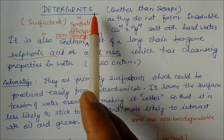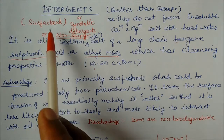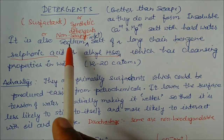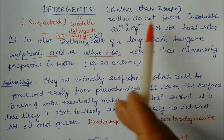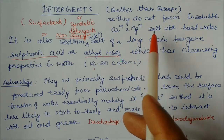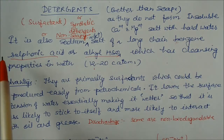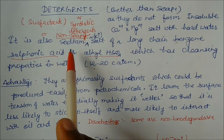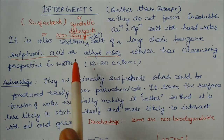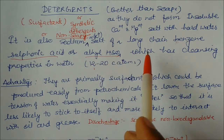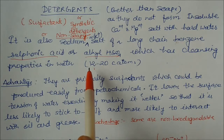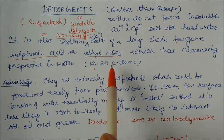Detergents are also called surfactants, anionic surfactants, synthetic detergents, or non-soapy. They are better than soaps because they do not form insoluble calcium or magnesium salts with hard water. By definition, a detergent is the sodium or potassium salt of a long-chain benzene sulfonic acid or alkyl hydrogen sulfate, which has cleansing properties in water. Normally, the long chain contains 12 to 20 carbon atoms.